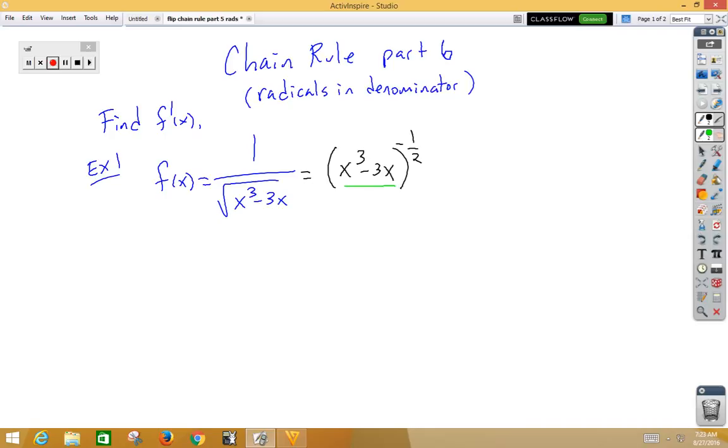My outside function would be something to the negative 1 half power. So f prime of x is equal to the derivative of the outside, so negative 1 half to the negative 3 halves. Again, I subtract 1 from the negative 1 half power. Don't change the inside. The inside multiply by the derivative of the inside would be 3x squared minus 3.